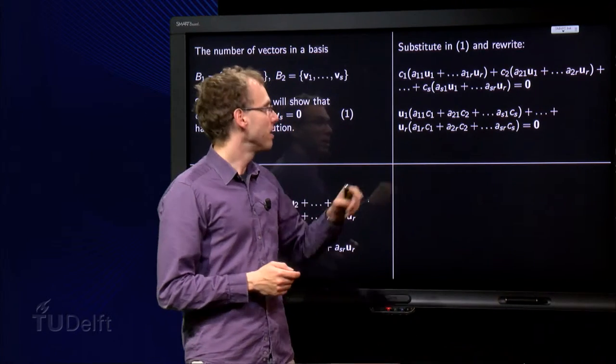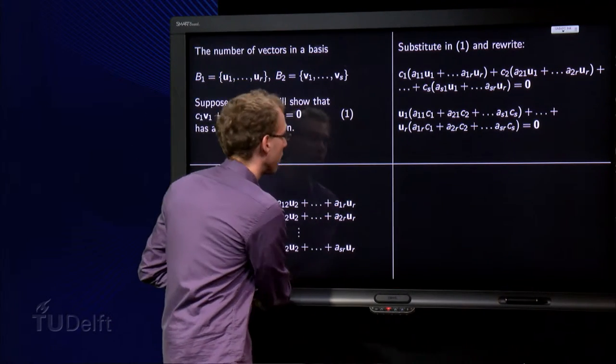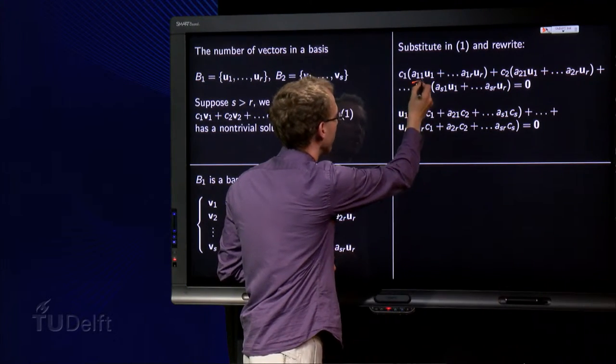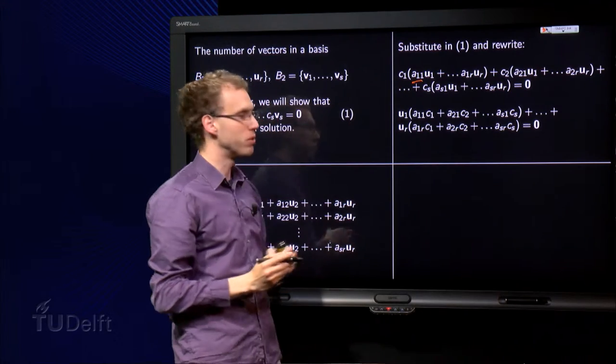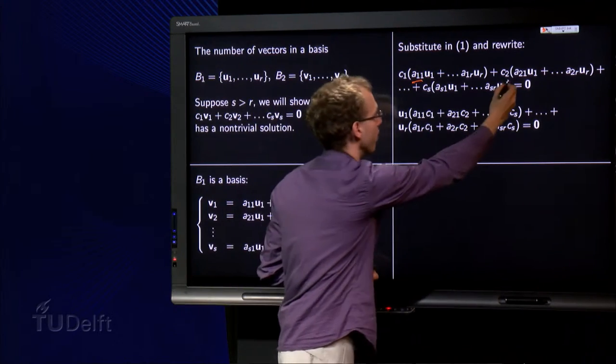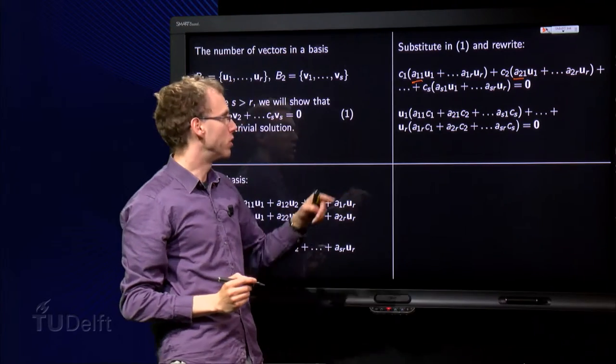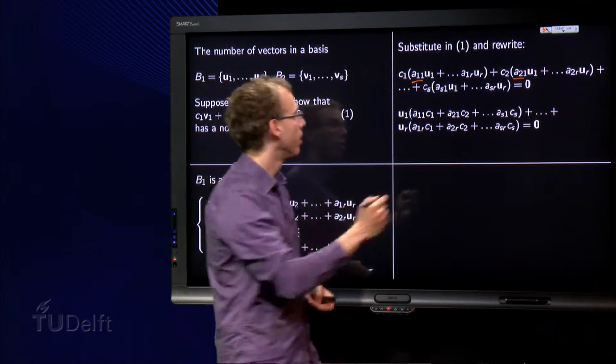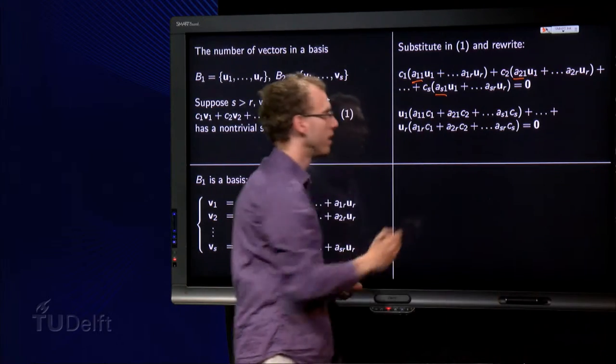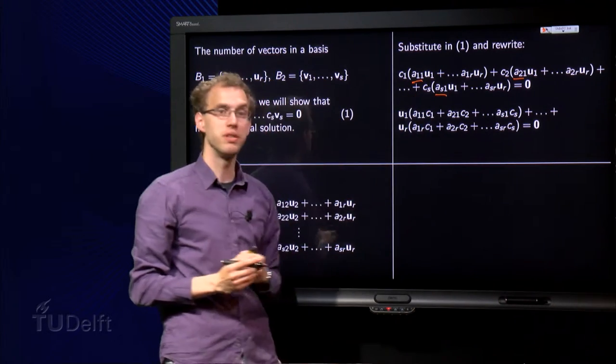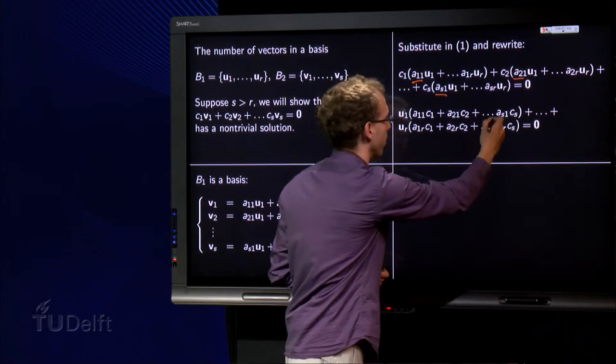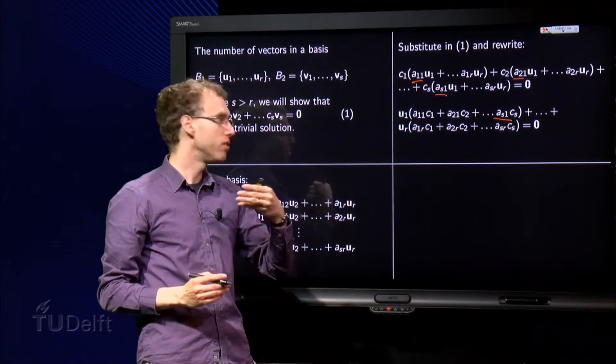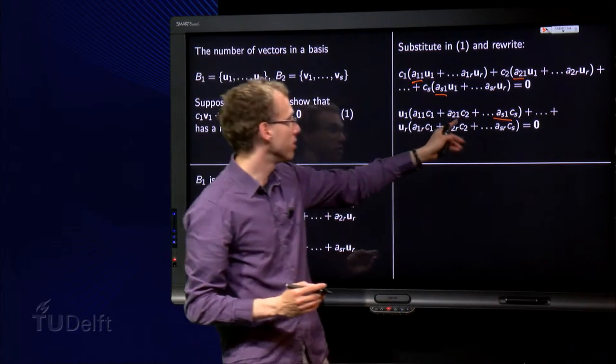I want to show that this leads to a non-trivial solution of c₁ up to cₛ. Well, let's order this a bit. Let's see what terms we have with u₁. Well, here we have a u₁, so a₁₁ times c₁, and here we have a u₁, a₂₁ times c₂, and that goes on and on, up to the last term over here, which is cₛ times aₛ₁, and all terms in between, so a₃₁ times c₃, a₄₁ times c₄, etc.